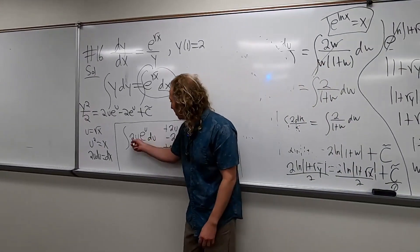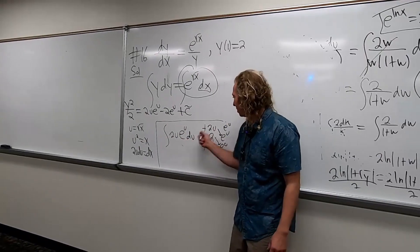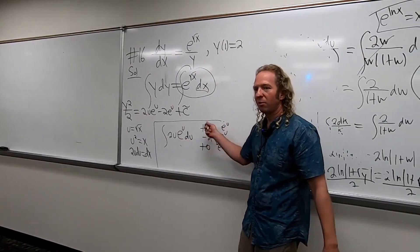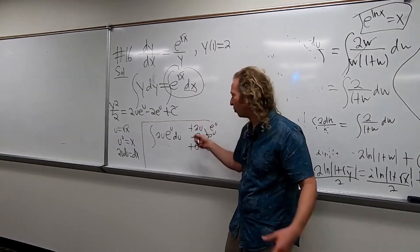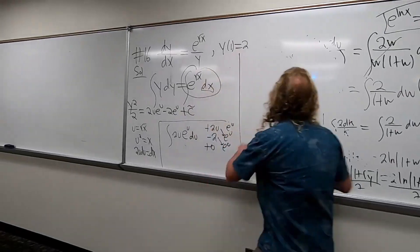So you can use integration by parts also on this one. The whole UdV, remember that? The integral of UdV is UV minus the integral of Vdu. You can use parts. So again, tabular, you pick one that is eventually zero. You pick one to integrate. Differentiate, differentiate, differentiate. Plus, minus, plus. Draw arrows, right?